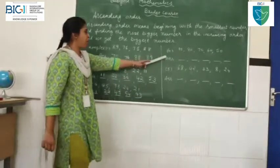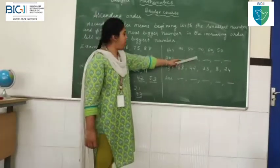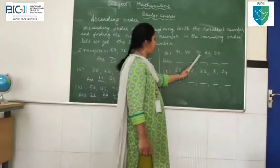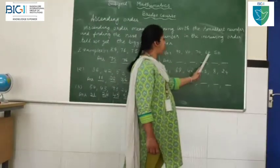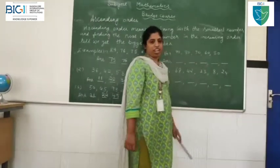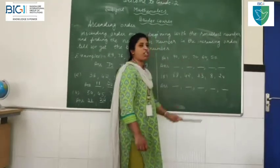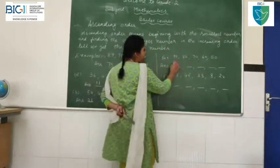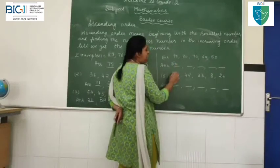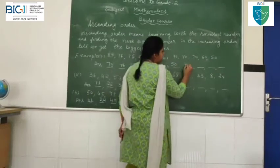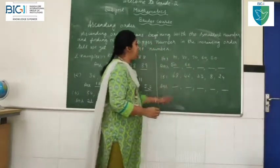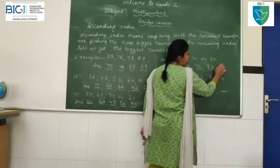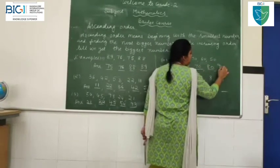Now I am going to the fourth example. 90, 80, 70, 60, 50. This is very easy for you. Which is the first smallest number for ascending order? We have to start from 50. After 50, 60. After 60, 70. After 70, 80. After 80, 90.